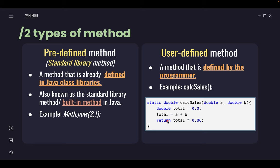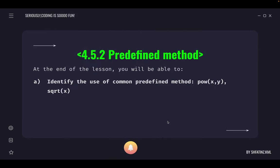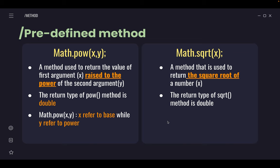We've already looked at the two types of methods. Next we move to the next subtopic, 4.5.2, which talks about predefined method. At the end of this subtopic you will be able to identify the use of common predefined methods which are pow and sqrt. In our syllabus we cover these two, although in your lab we've done many more like Math.max, Math.min. But for the lecture we'll only cover these two: pow and sqrt.